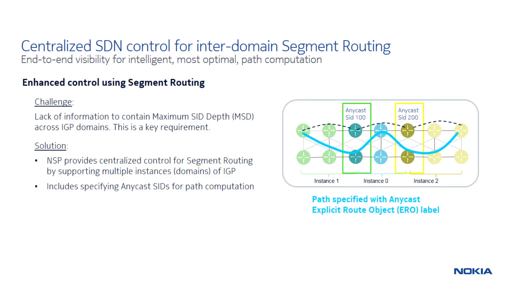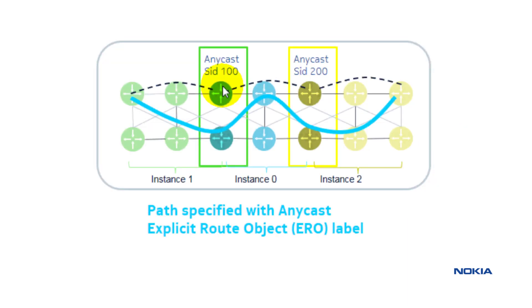We are showing two ways to solve this. One is taking advantage of anycast SIDs. If you have domain ASBRs — routers between instance 1 and instance 0, and instance 0 and instance 2, for example — and if those ASBR routers have anycast SID representations, then on the NSP side we can provision a segment routing ERO using only anycast.